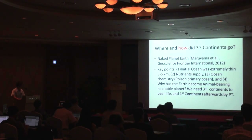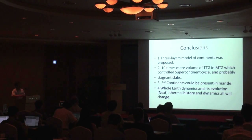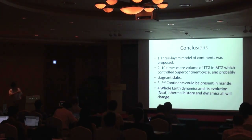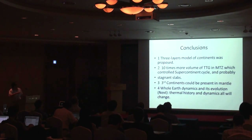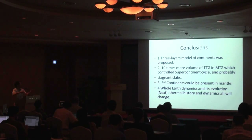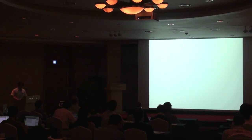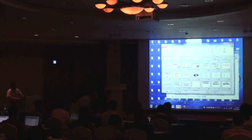In conclusion: the three-layers model of continents is proposed. There is ten times more volume of TTG in the mantle transition zone, which controls the supercontinent cycle. Third continents could be present in the mantle. All mantle dynamics and its evolutionary history and dynamics will be changed. Thank you.